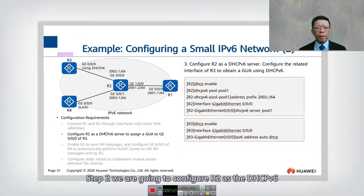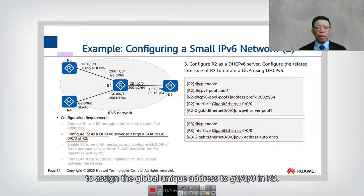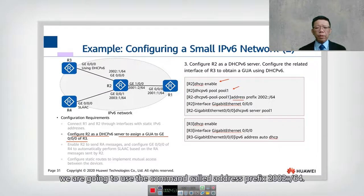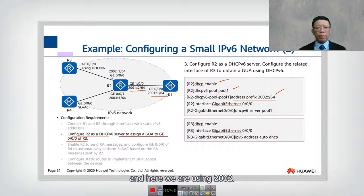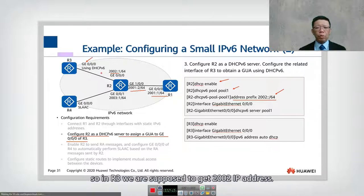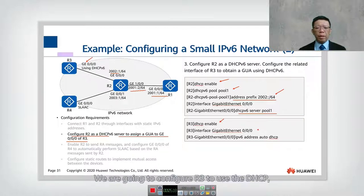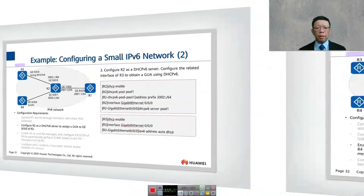Step 2: Configure R2 as a DHCPv6 server to assign global unique addresses to R3's GE 0/0/0. On R2, enable the DHCP service and configure a pool using 'dhcpv6 pool pool1' with address prefix 2002::/64. Then configure the DHCPv6 server pool on the interface. On R3, go into the interface and configure 'ipv6 address auto dhcp' to obtain an IP address from R2.